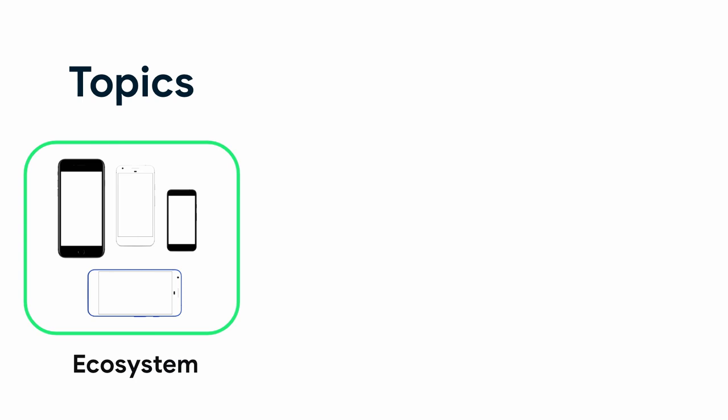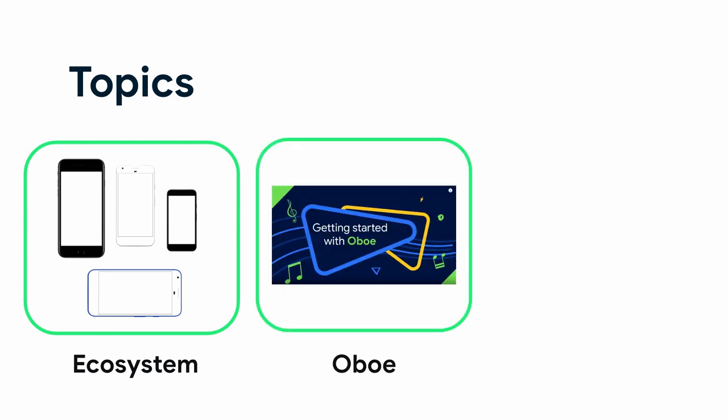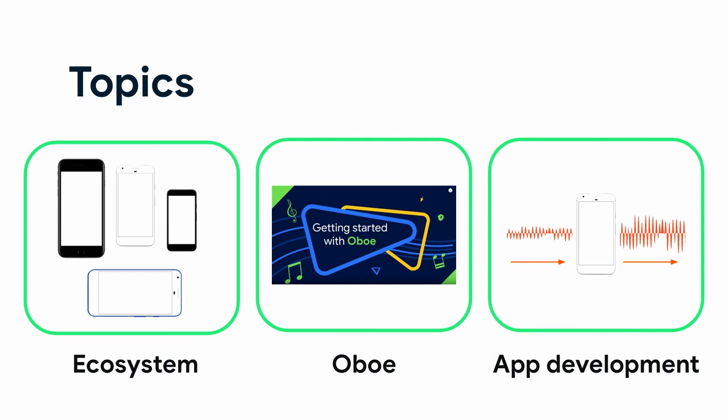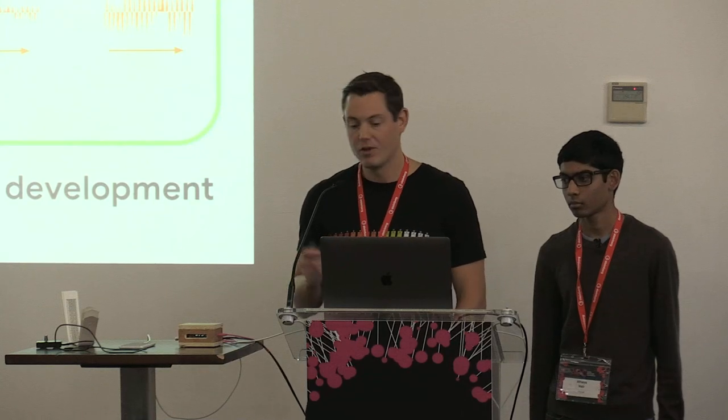Today we're going to talk about three things which help do better real-time processing on Android. The first is the ecosystem and how we've worked over the past five years to bring down audio latency across the entire Android ecosystem. We'll also talk about Oboe, a C++ library designed to make real-time processing easy, providing the best possible audio latency across the widest range of devices. And really, the meat of our presentation today is to build a real-time processing app — we're going to build the most important parts and demo it live.